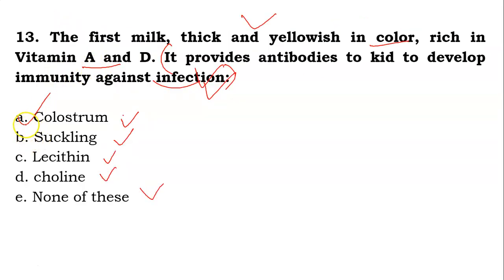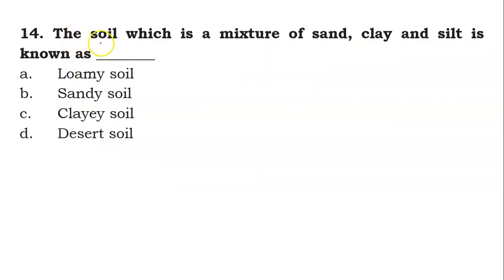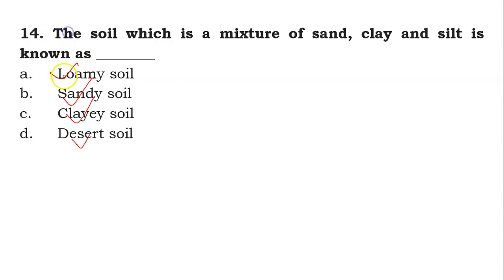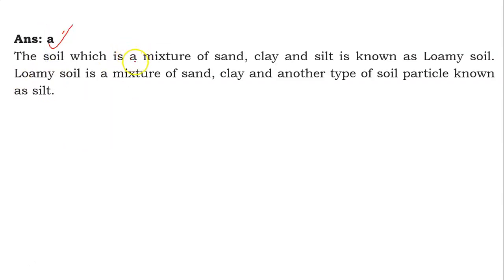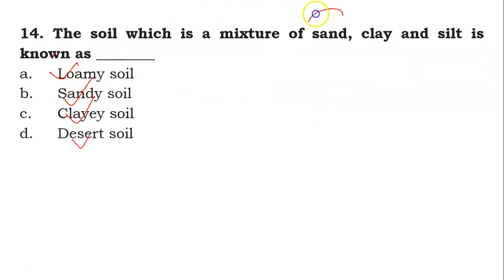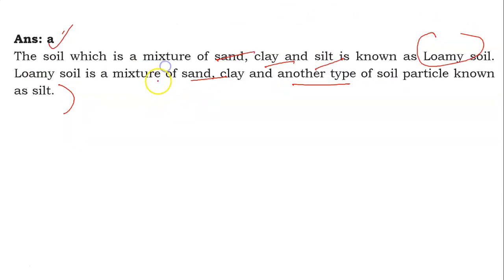The fourteenth question: the soil which is a mixture of sand, clay, and silt is known as — Loamy, Sandy, Clay, or Desert soil? Friends, its answer is A. The soil which is a mixture of sand, clay, and silt is known as loamy soil. Loamy soil is a mixture of sand, clay, and other soil particles known as silt — a mixture of these three is known as loamy soil.